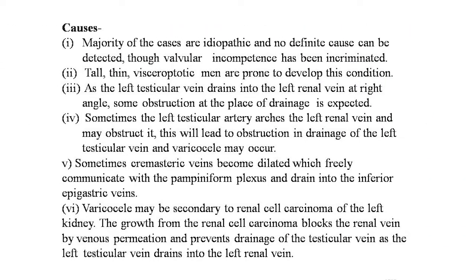Causes of varicocele: the majority are idiopathic, though valvular incompetence has been implicated. Tall, thin, varicose-prone men are more susceptible. The left testicular vein drains into the left renal vein at a right angle, causing some obstruction at the drainage point. The left testicular artery sometimes arches over the left renal vein and may obstruct it, leading to obstruction of left testicular vein drainage. Cremasteric veins may become dilated and communicate freely with the pampiniform plexus, draining into the inferior epigastric vein. Varicocele may also be secondary to renal cell carcinoma of the left kidney, where tumor growth blocks the renal vein by venous permeation, preventing drainage of the testicular vein.